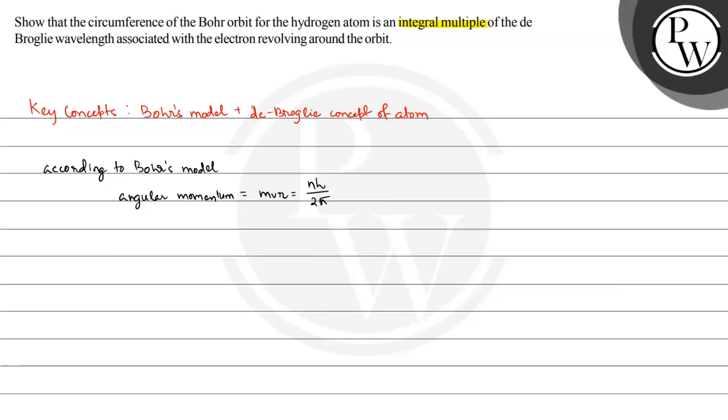So if we determine the circumference of that orbit, then 2π goes to the other side. So 2πr is equal to nh by mv. This is one equation.